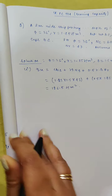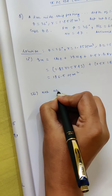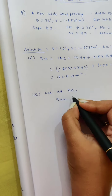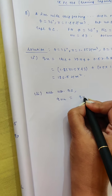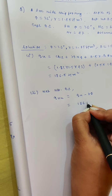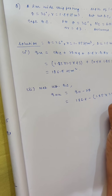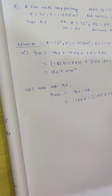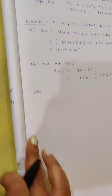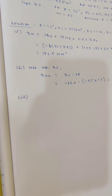Putting in the values: the first term becomes 0 since c is 0. Then gamma·D·Nq = 1.85 × 1.5 × 42, plus 0.5 × gamma × B × Ngamma = 0.5 × 1.85 × 2 × 47. After calculation, the ultimate bearing capacity is 186.5 ton per meter square.